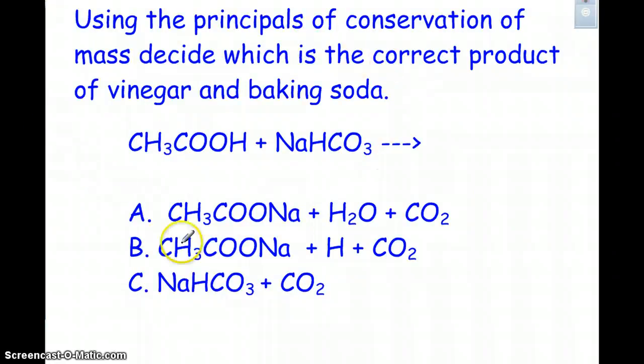This would be a level four. Using the principles of conservation of mass, decide which is the correct product of vinegar and baking soda. So here this is the molecular formula for vinegar, CH3COOH, and this is the molecular formula for baking soda, NaHCO3. When we combine these two, what would you get? Would you get the chemical formula in A, B, or C? See if you can pause the video and figure it out.